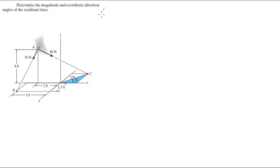So the position of A is 0i minus 2j plus 4k. The position of B is 1.5i minus 3j plus 0k. And the position of C, we've got to calculate it.